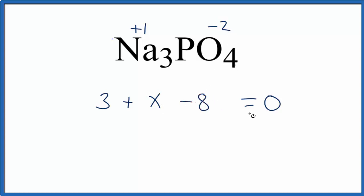Now we have a mathematical expression and we can see that we'll have X and three and minus eight, that gives us minus five that'll equal zero. We add five to both sides and X equals plus five. So the oxidation number on the phosphorus is going to be plus five.